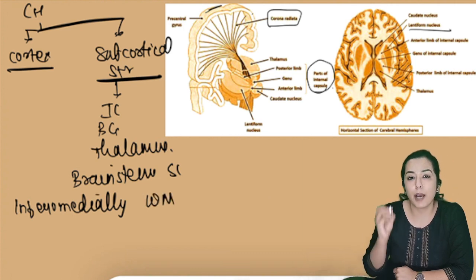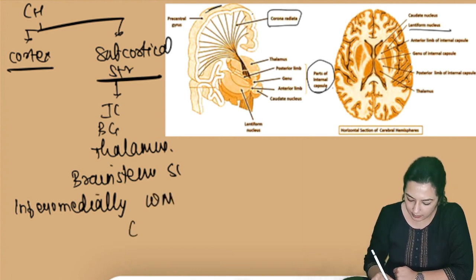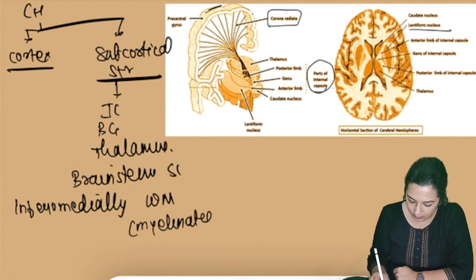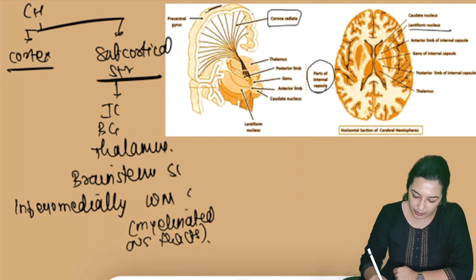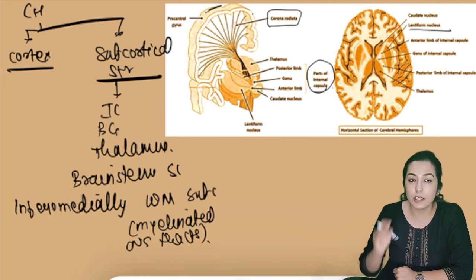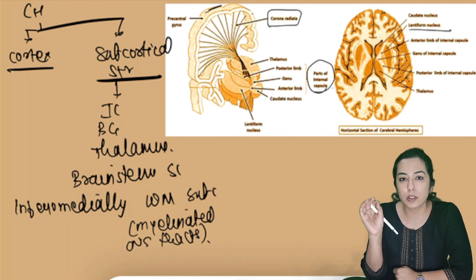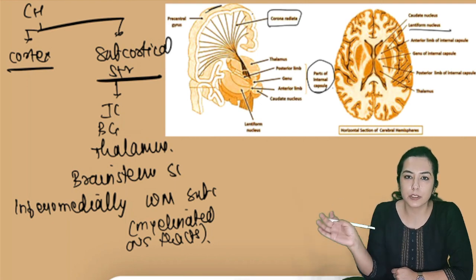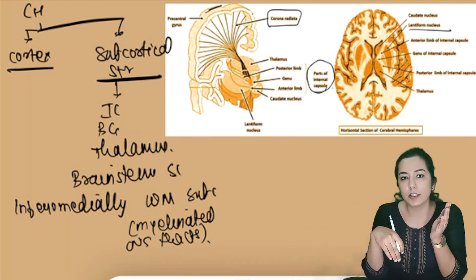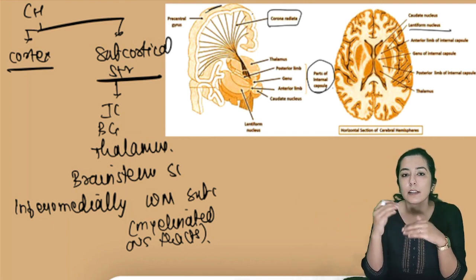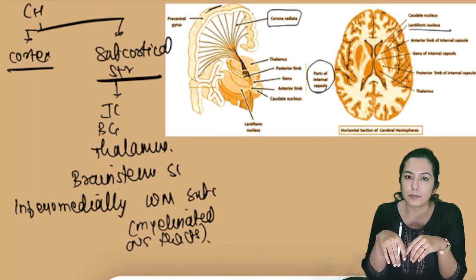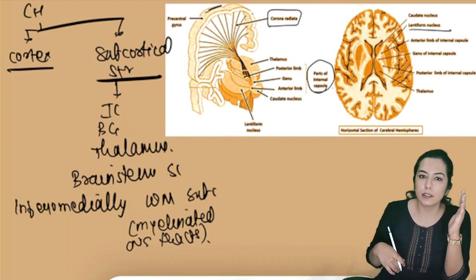It is a white matter structure, meaning it contains myelinated CNS tracts. So basically, the internal capsule is an inferomedial white matter subcortical structure in the cerebral hemisphere, through which CNS tracts travel to and from the cortex and subcortical structures.